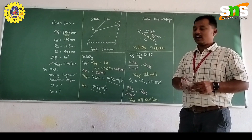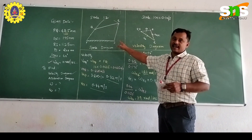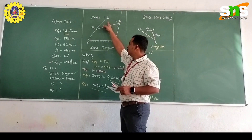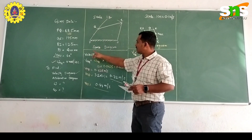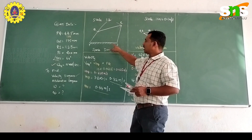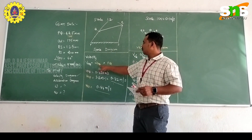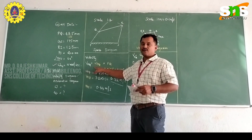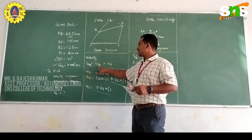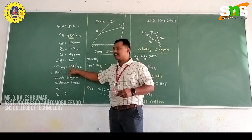In the space diagram, we drew it according to a scale of 1:2, converting measurements accordingly. After constructing the space diagram, we need to find the velocity values. The formula for velocity is the angular velocity of the particular link multiplied by the length of the link.